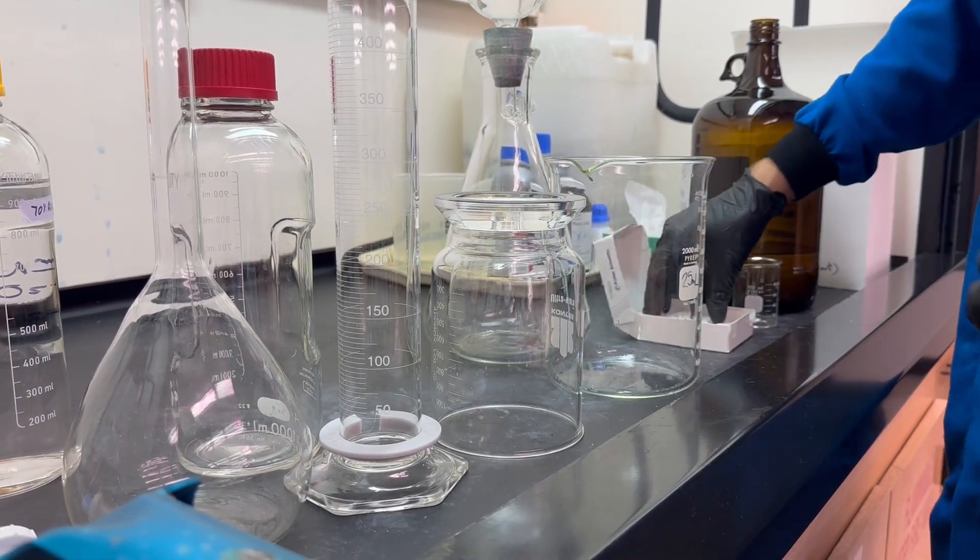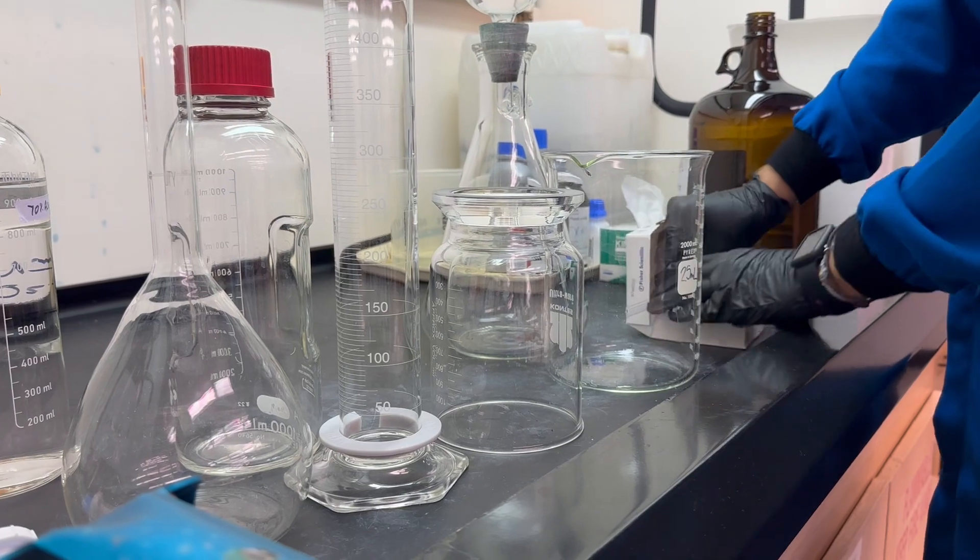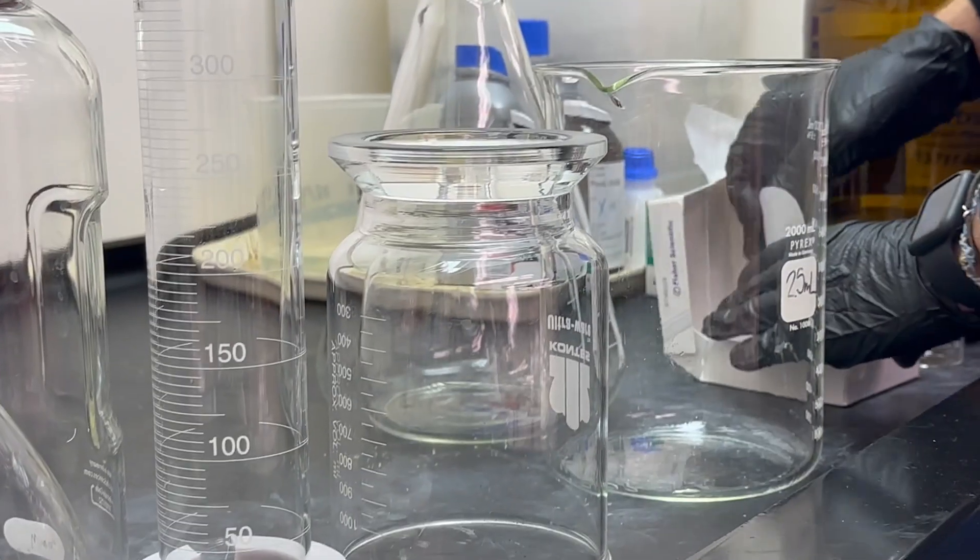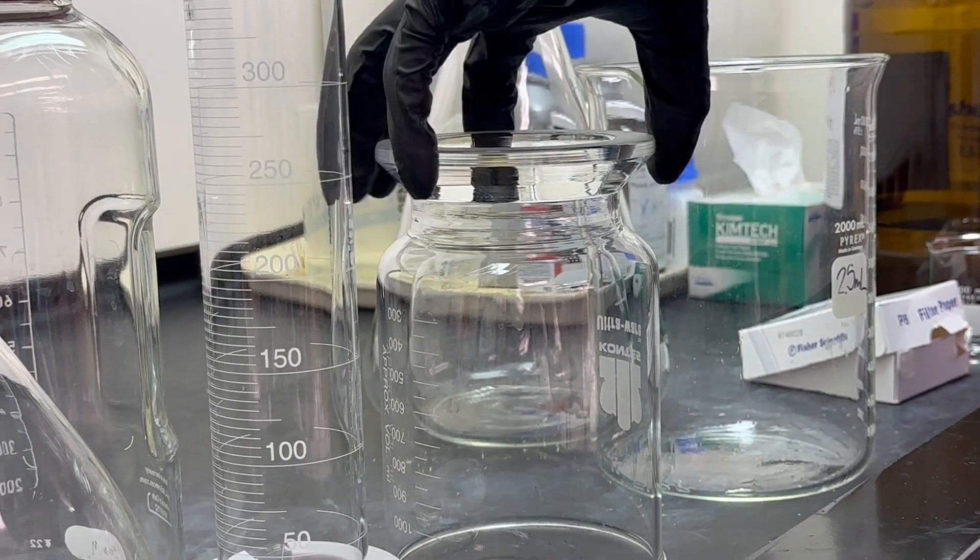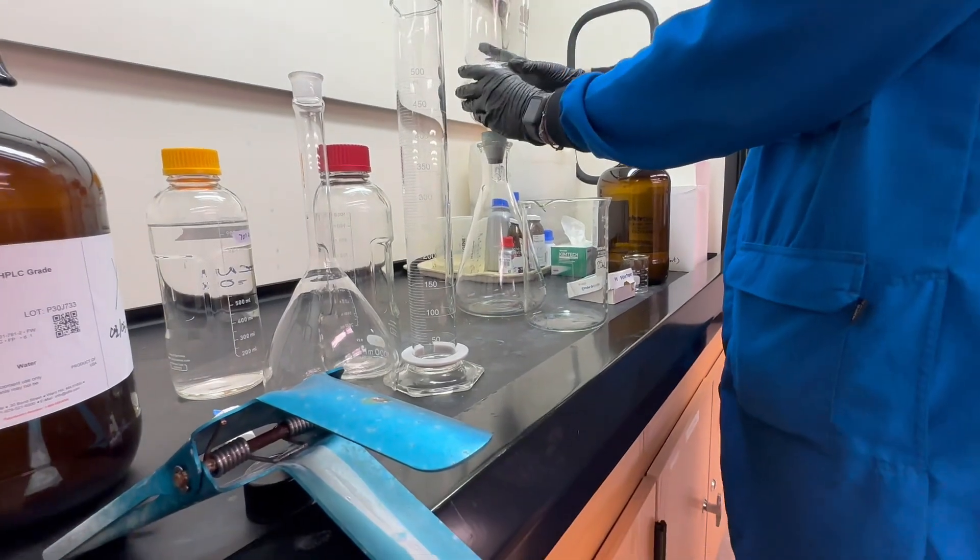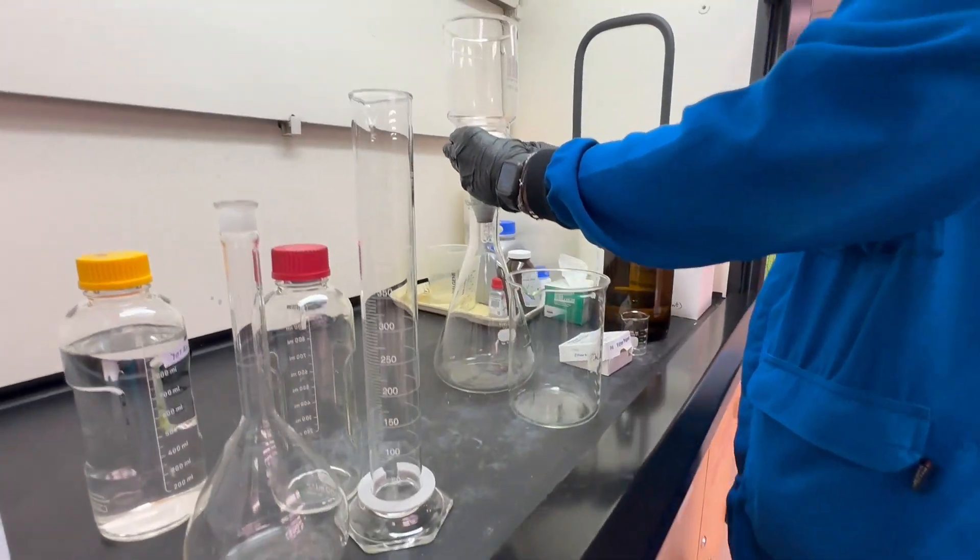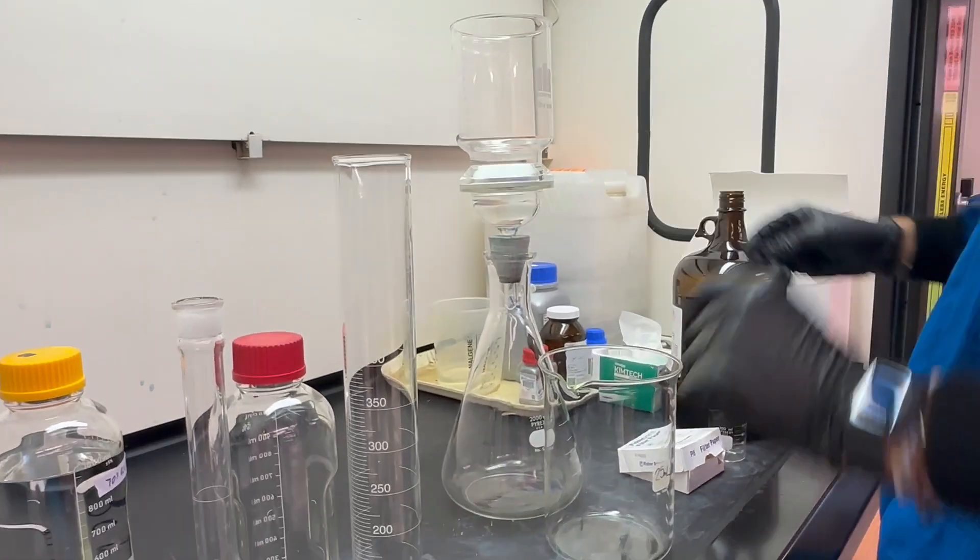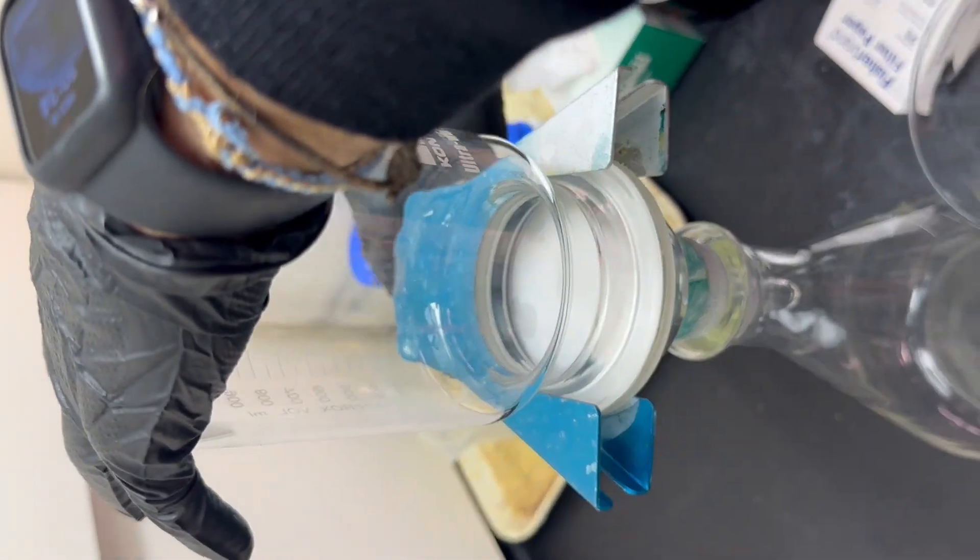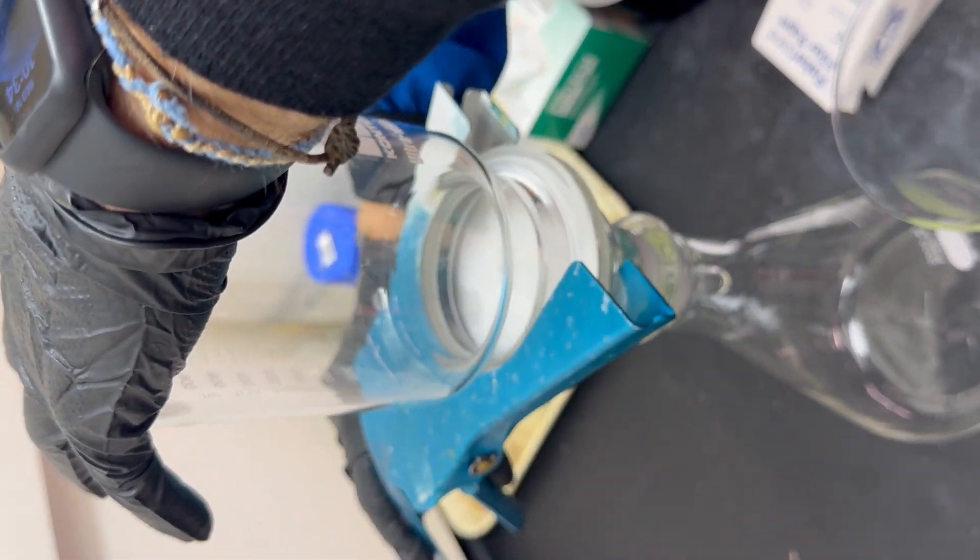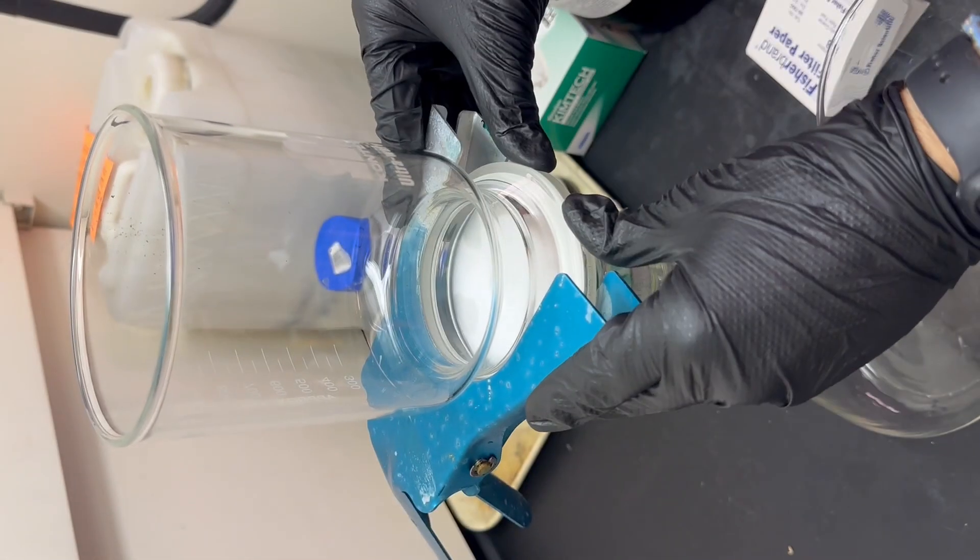The first thing we're going to do here is grab a 0.2 micron filter paper, add it in here, combine this, and then clamp it down. I'm going to clamp it so that way it's out of my way, so I can see.